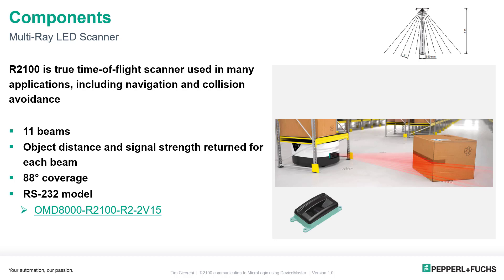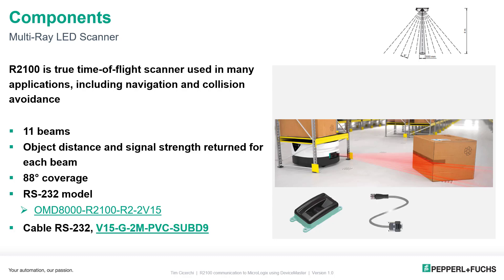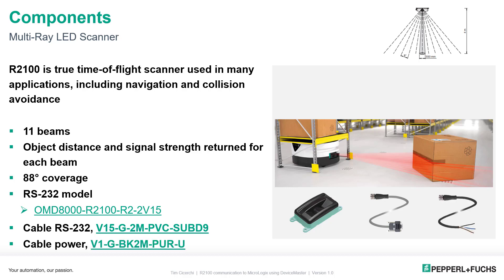There are a few components you want to consider purchasing. First, of course, is the R2100 itself. This is demonstrating RS-232 connectivity, so get the RS-232 version. Then you want the RS-232 cable — this makes the plug-and-play from the R2100 directly to the device master very simple, with an M12 on one side and DB9 on the other. Then of course you've got the power cable, M12 with flying leads. You can get many colors and connector options as well.